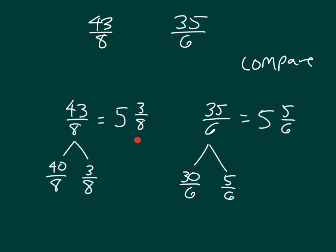So then what we can do is we can just compare these two here. So we have 3 eighths with 5 sixths. What do we know about 3 eighths with 5 sixths when we think of our benchmark fraction of 1 half? 3 eighths actually is less than 1 half, whereas 5 sixths is more than 1 half. So that 5 and 3 eighths is less than 5 and 5 sixths.